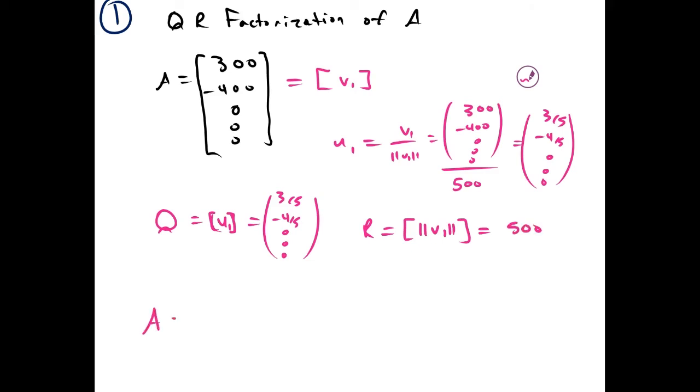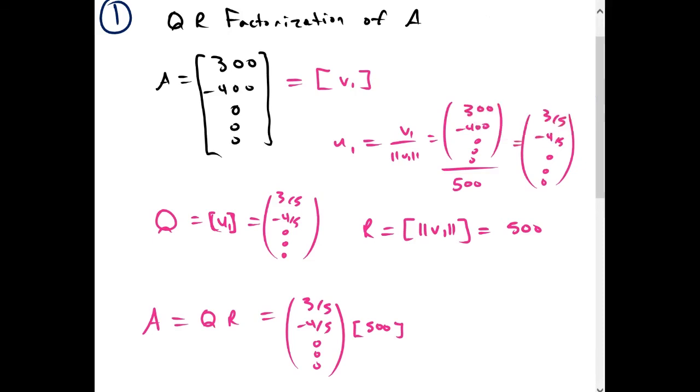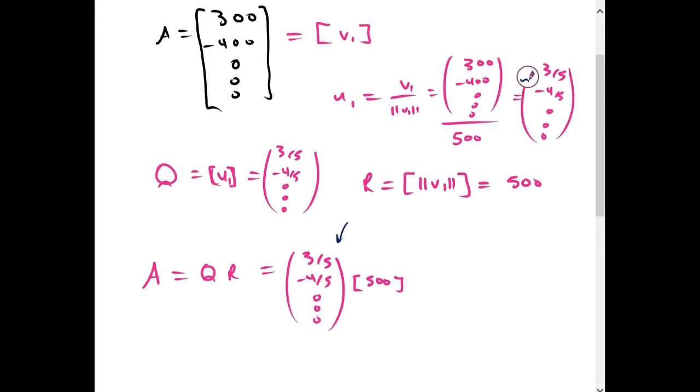So we can write A as the product of Q and R, with Q being that column vector and R being 500. So this might be a simple example, but it shows you what we're trying to do. We're getting Q, whose columns are orthonormal, and an R that converts us from Q to A.